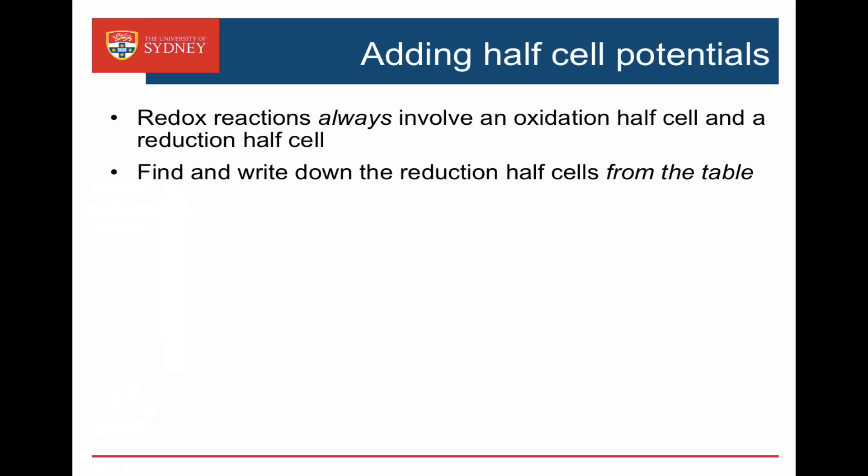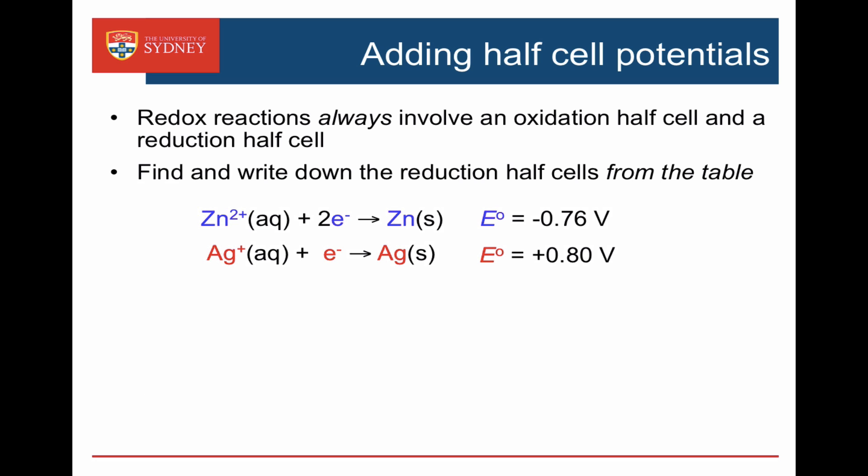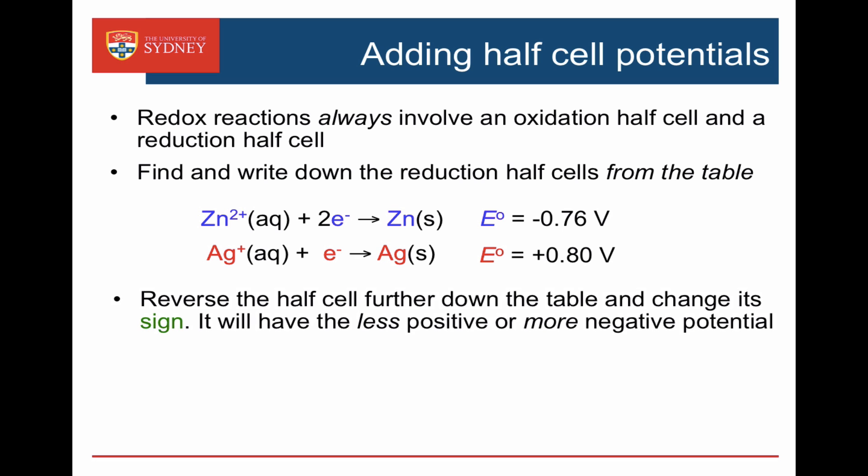How do we know which one to reverse when we couple two half cells together? We find and write down the half cell potentials from the table — they're written as reductions. Here we've got the reduction half cell for zinc 2+, which is minus 0.76 volts, and the reduction half cell potential for silver ions, which is plus 0.8 volts. We reverse the one that's further down the table — the one with the less positive or more negative potential. Here it's the zinc at minus 0.76 volts. When we reverse it, it becomes zinc being oxidized to zinc 2+ and two electrons, and its oxidation potential is plus 0.76.